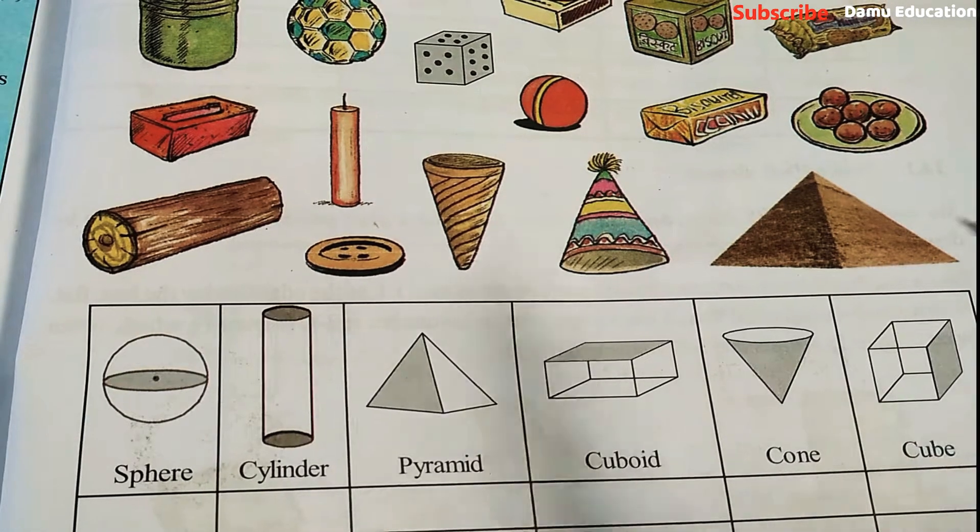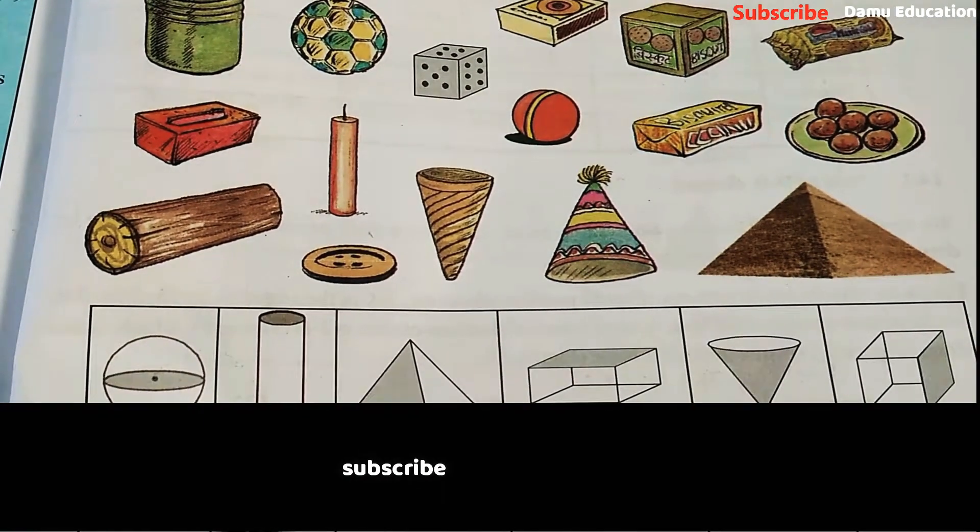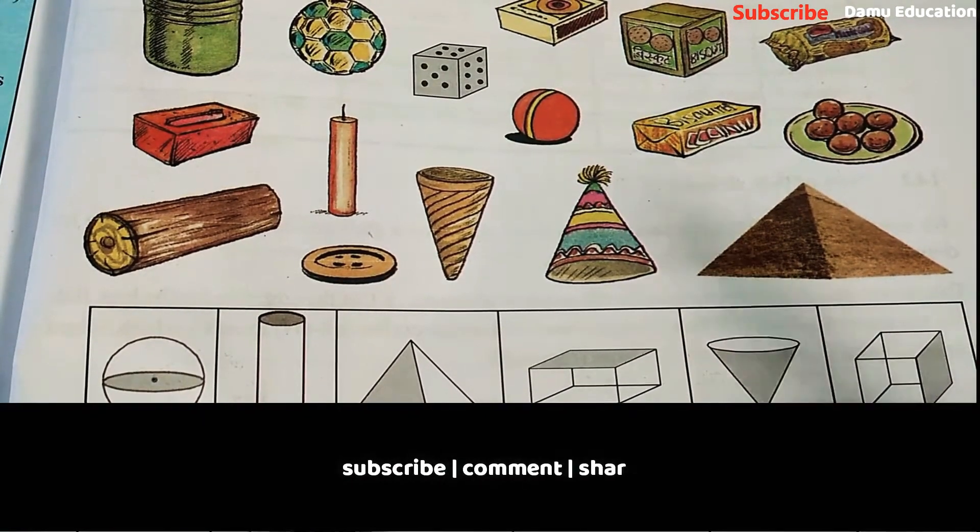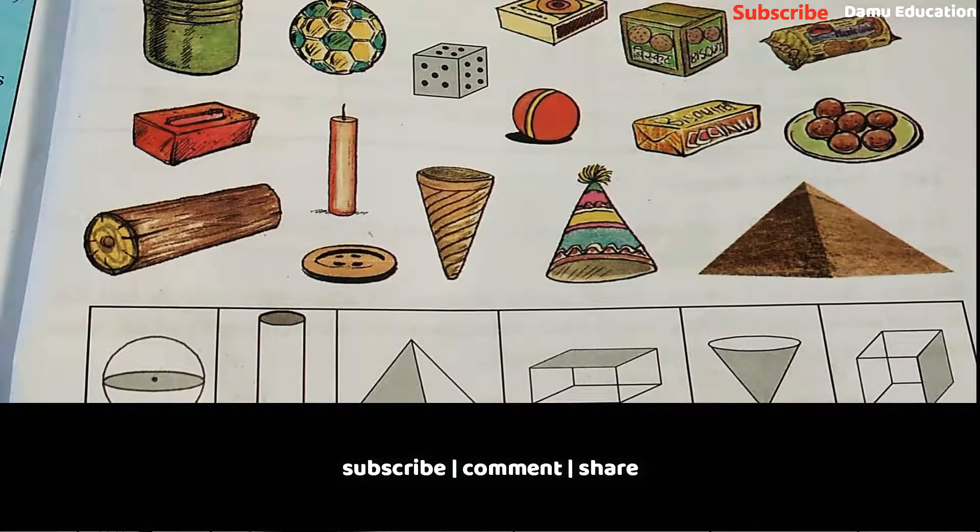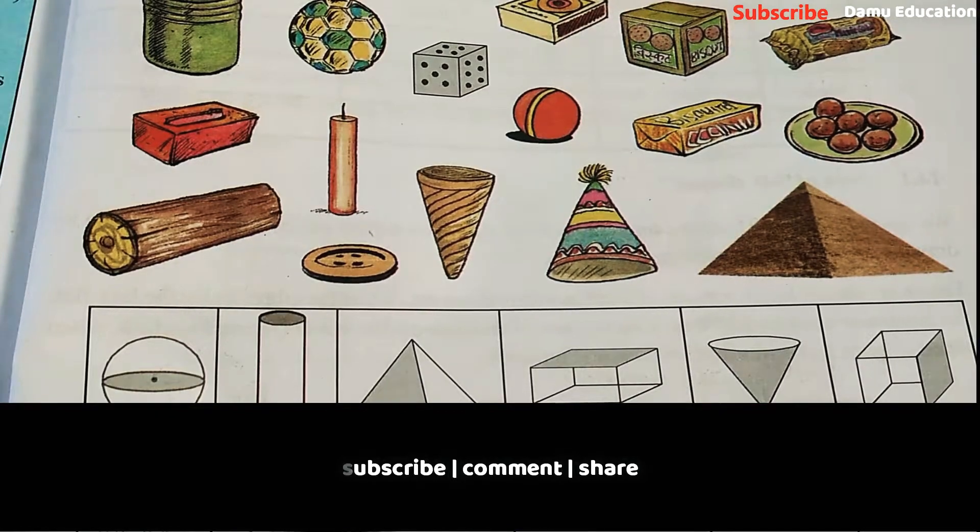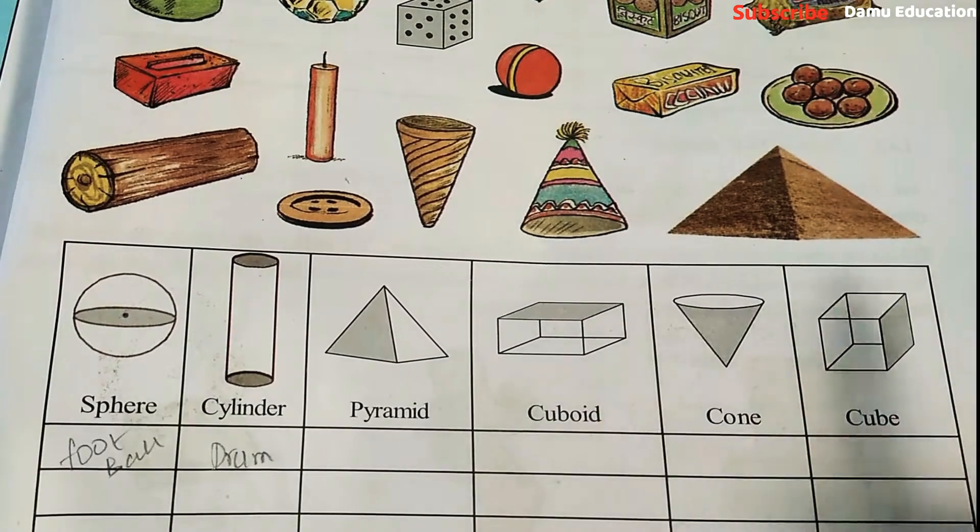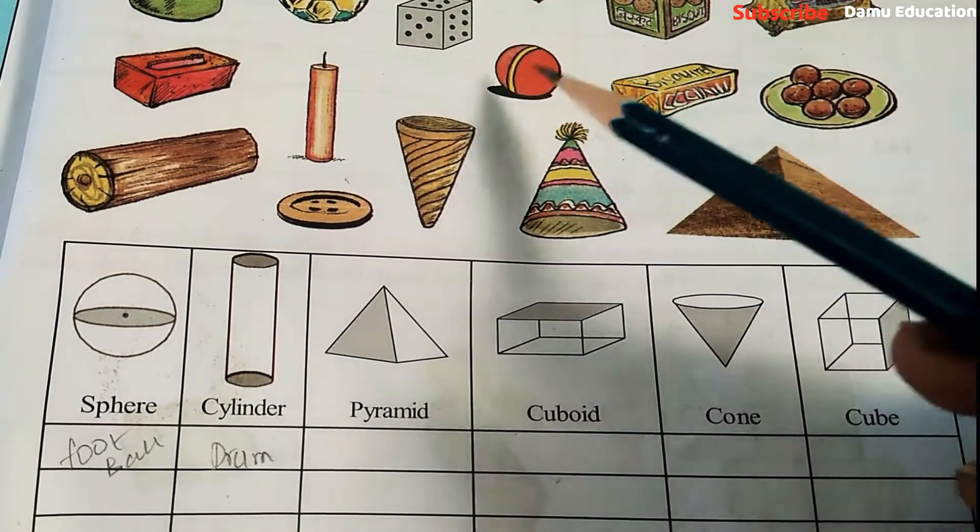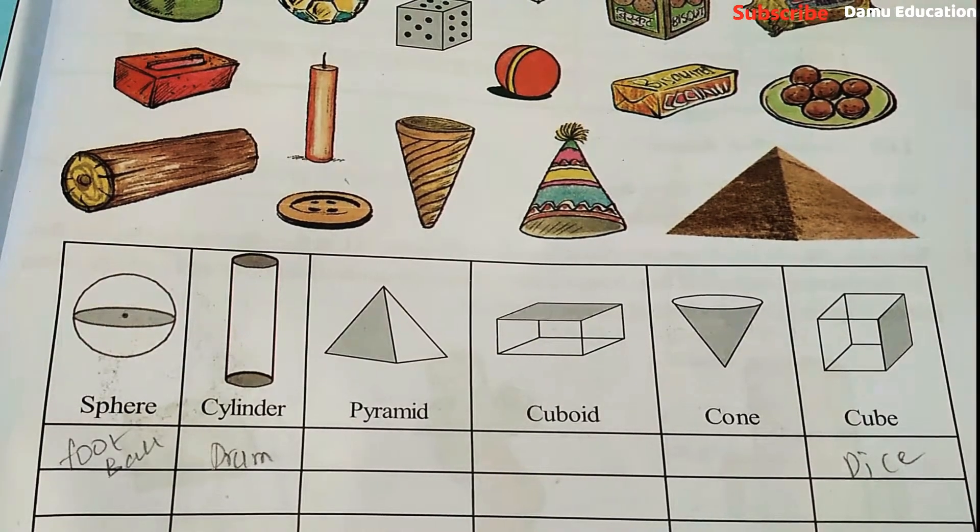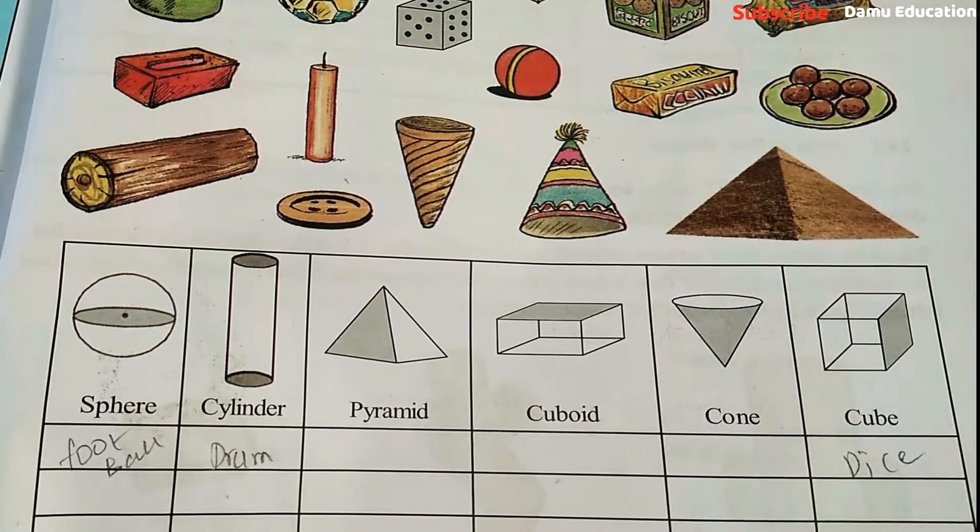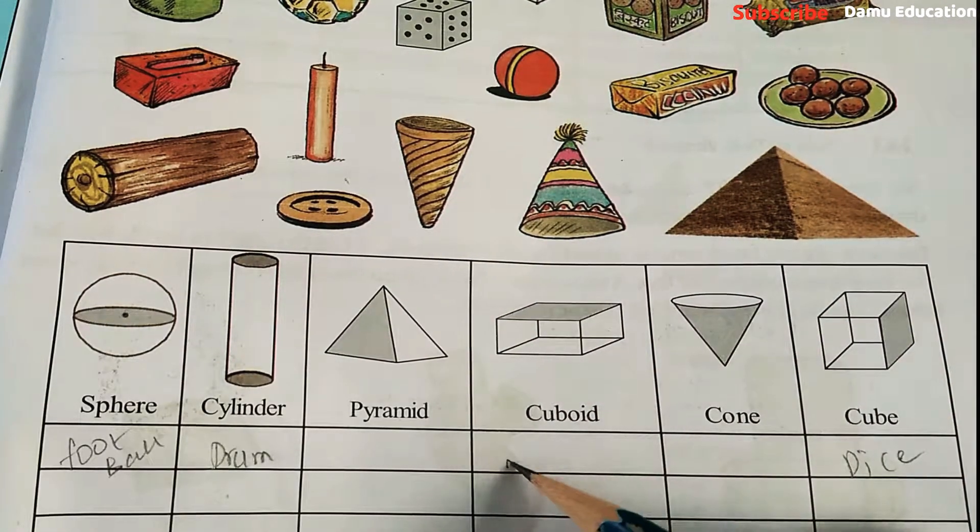First, drum will become cylinder - drum or tank. Then football will be sphere - football or volleyball. Next, dice will be cube since all sides are equal. Matchbox is a cuboid because opposite sides are equal and it is simply extended, not all equal sizes.